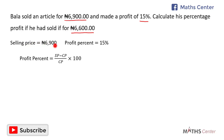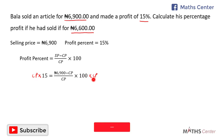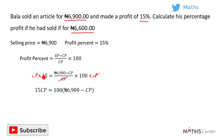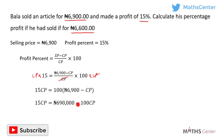The selling price is 6,900 Naira and the profit percent is 15%. Substituting into the formula: 15% = (6,900 − CP) / CP × 100. Multiplying both sides by CP, the CP terms cancel, giving us 15CP = 100 × (6,900 − CP). Expanding the bracket: 15CP = 690,000 − 100CP.